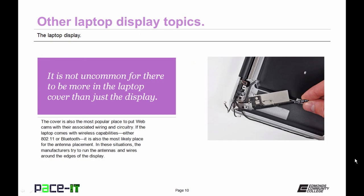In the modern laptop, it's not uncommon for there to be more in the laptop's cover than just the display. The cover is also the most popular place to put a webcam with their associated wiring and circuitry. Also, if the laptop comes with wireless capabilities, either 802.11 or Bluetooth, it's the most likely place for the antenna placement. In these situations, the manufacturer will try and run the antennas and wires around the edges of the display. You need to be aware of that so if you ever need to work on a laptop display, you need to realize there might be more in there than just the display.